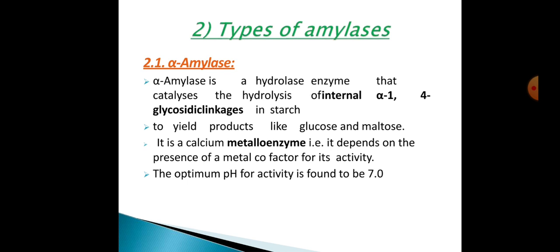Now, the types of amylases. Alpha-amylase is a hydrolysis enzyme that catalyzes the hydrolysis of internal alpha-1,4 glycosidic linkages in starch. The optimum pH of alpha-amylase is found to be 7.